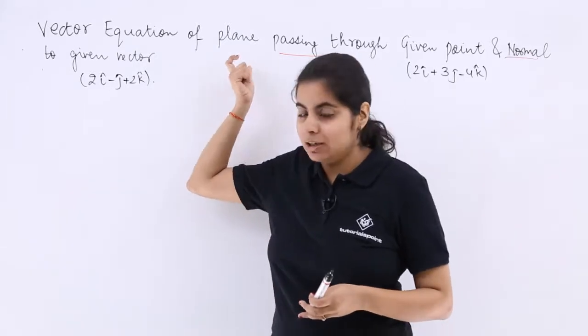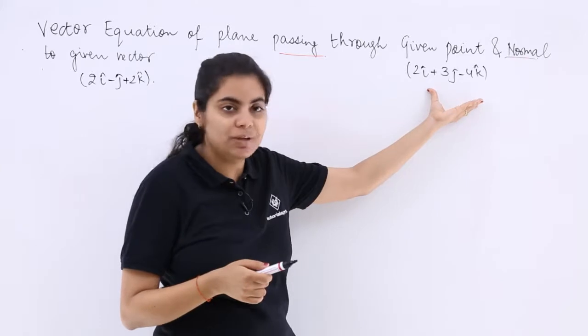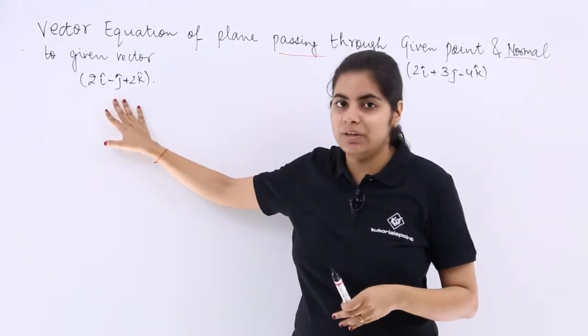The point we're discussing that passes through a given point - the equation of that point is given, this is the position vector of that point. And perpendicular to a given vector is given - this is the given vector.